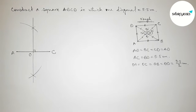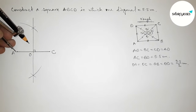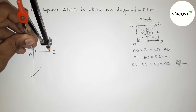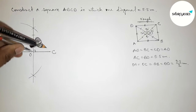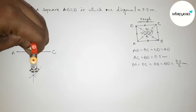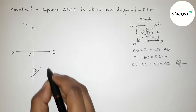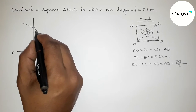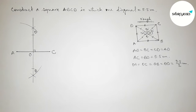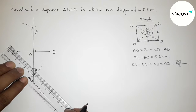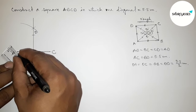Now checking that the length OA equals OC — this is perfectly equal. Taking the same length, we cut arcs to mark point B and point D on the perpendicular bisector, at equal distances from O.